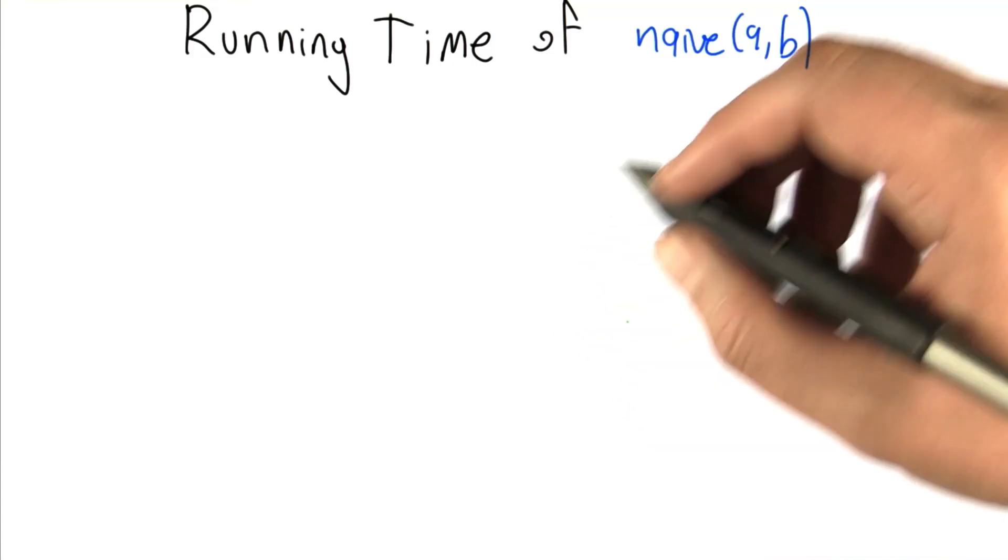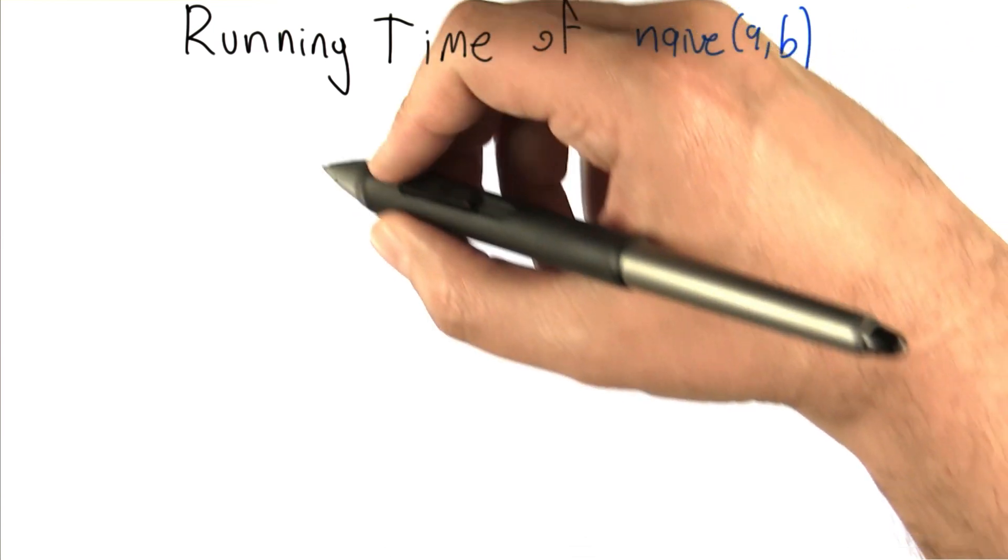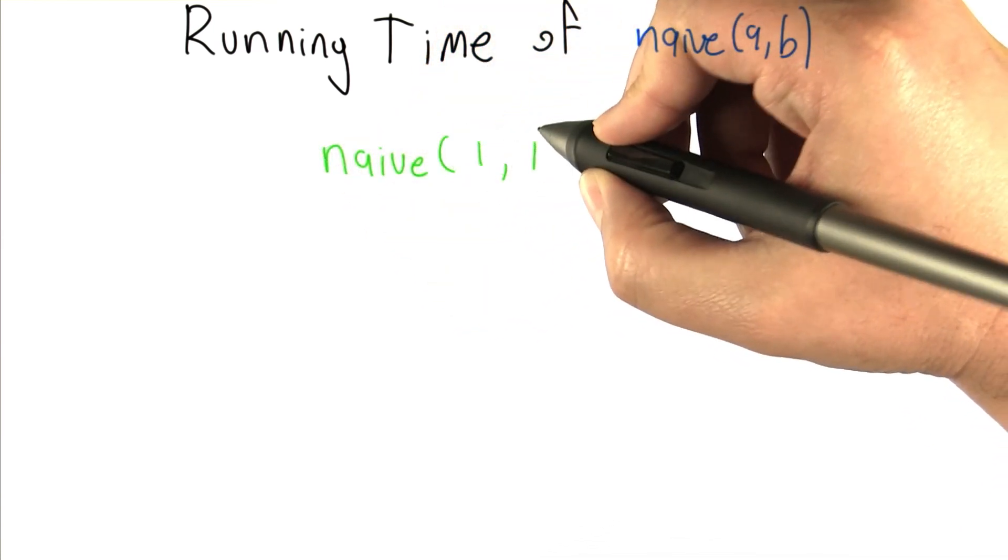All right, what I'd like you to think about is how long does it take for naive AB to execute as we look at larger and larger inputs.